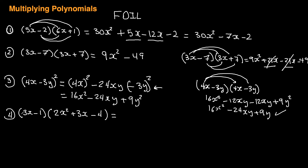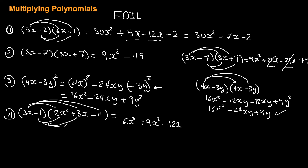Now let's do question four: foiling a binomial into a trinomial. We do the same thing, except instead of two branches, we get three branches going out. 3x times 2x squared is 6x cubed. 3x times positive 3x is plus 9x squared. 3x times negative 4 is negative 12x. Then foil the negative 1: negative 1 times 2x squared is negative 2x squared. Negative 1 times positive 3x is negative 3x. Negative 1 times negative 4 is plus 4.